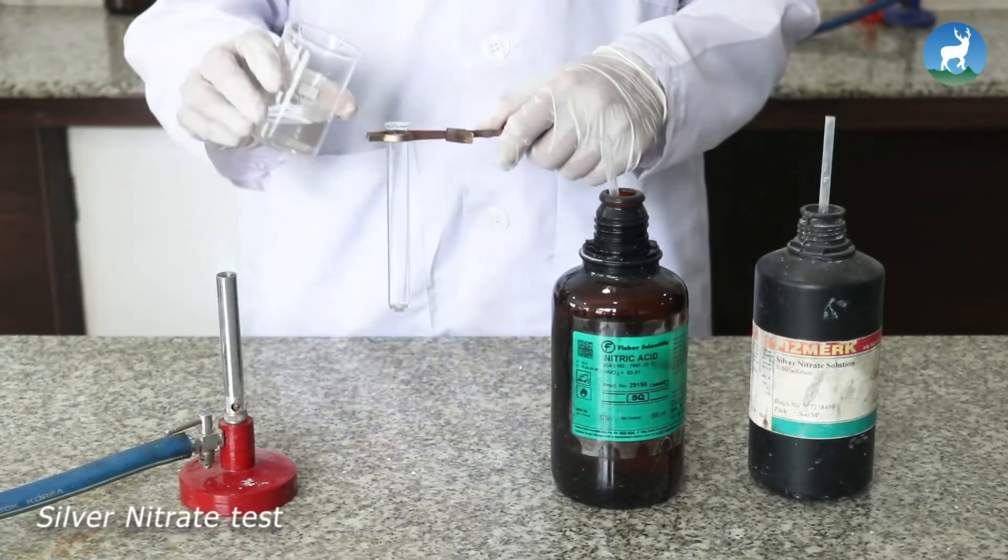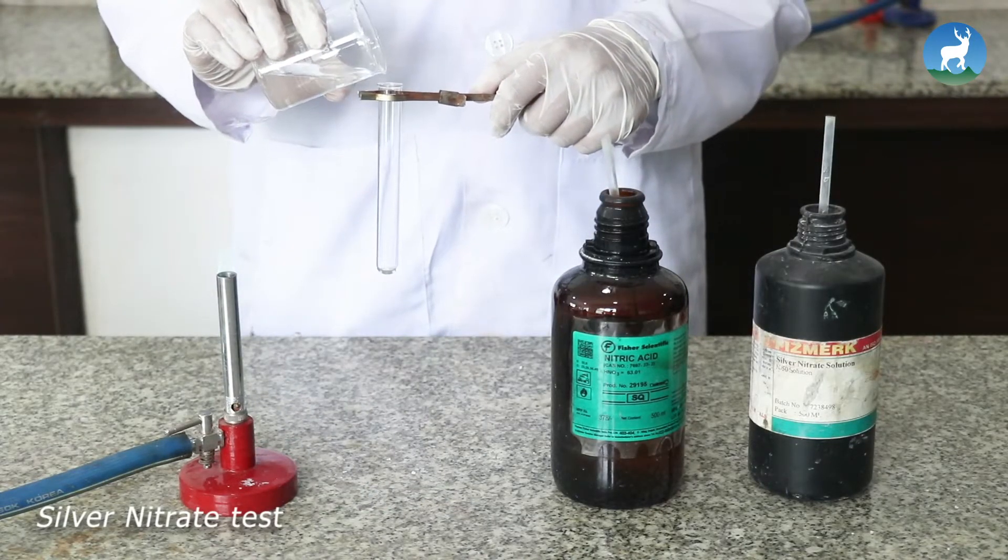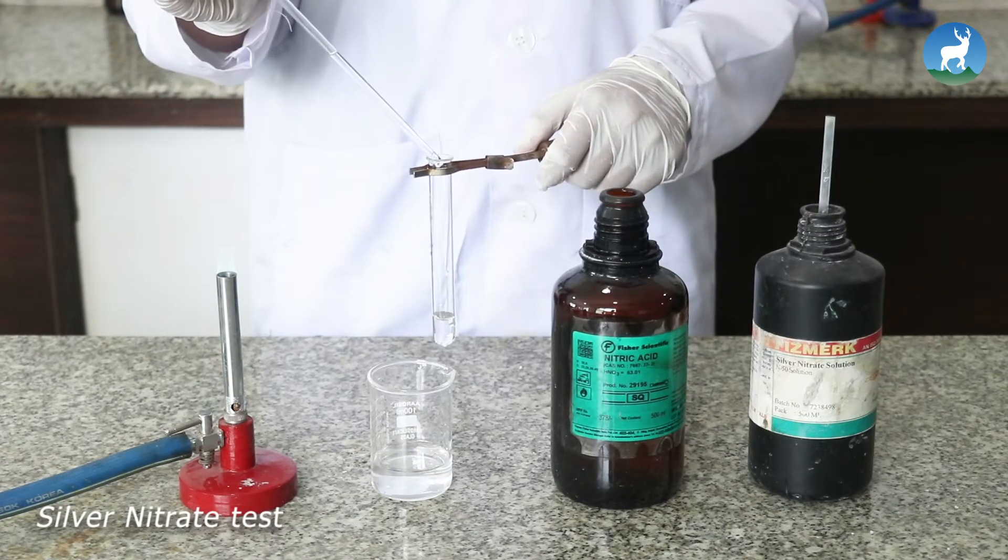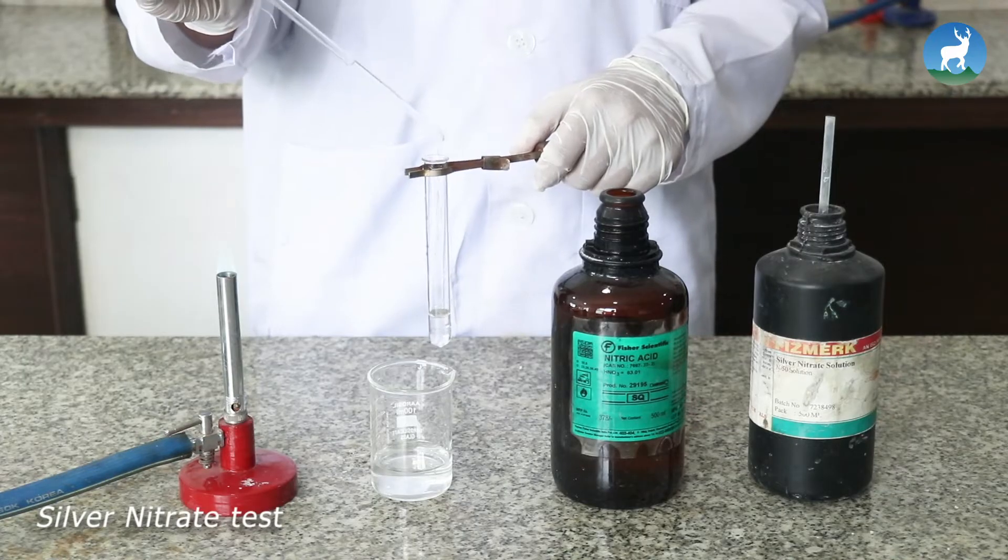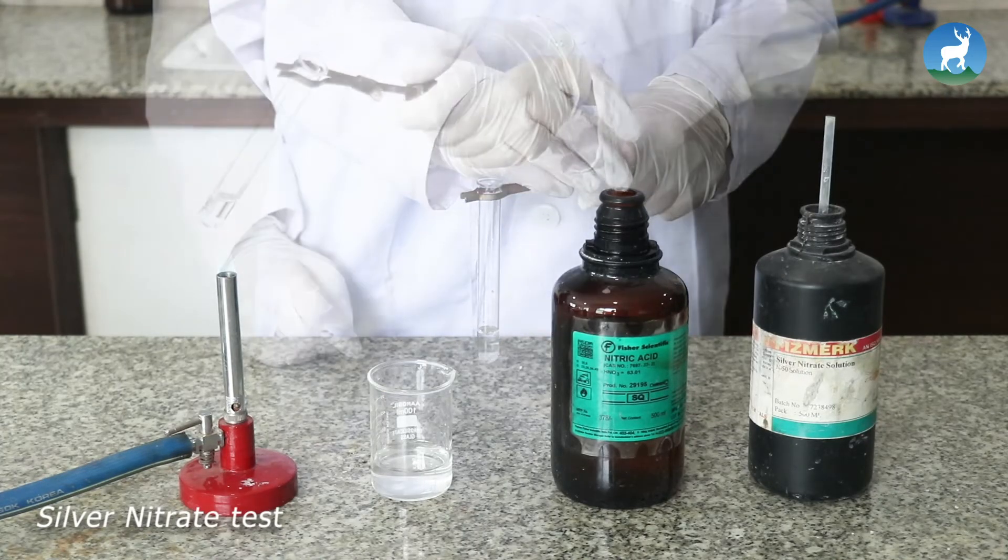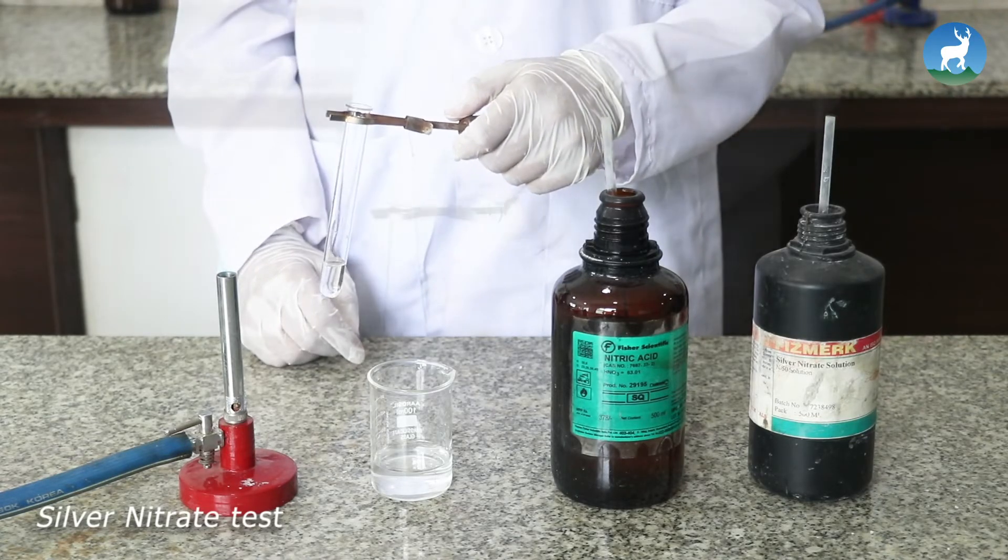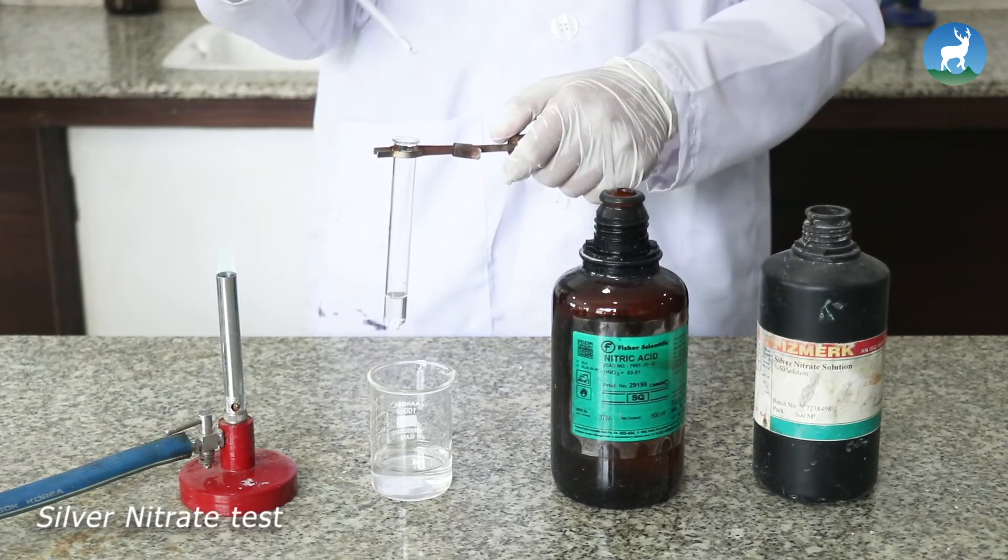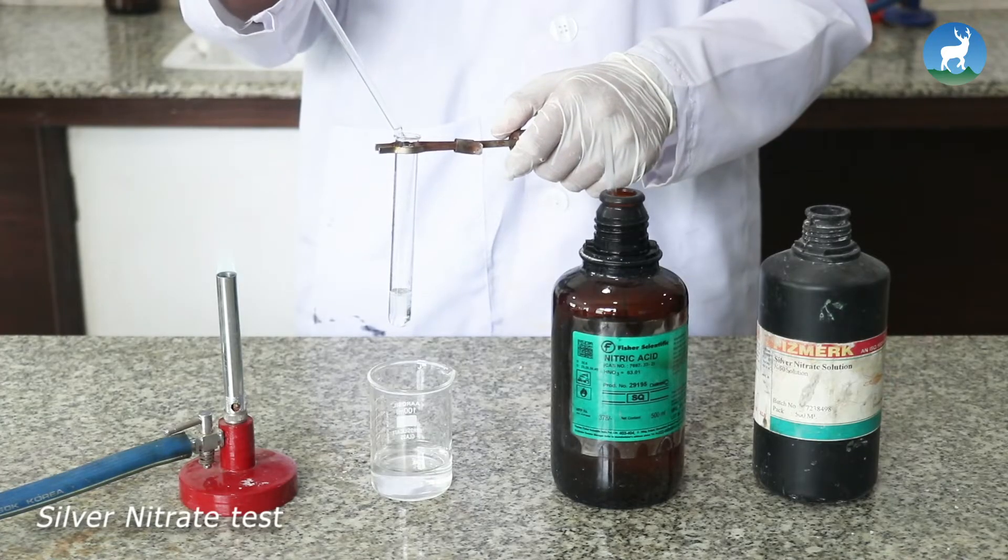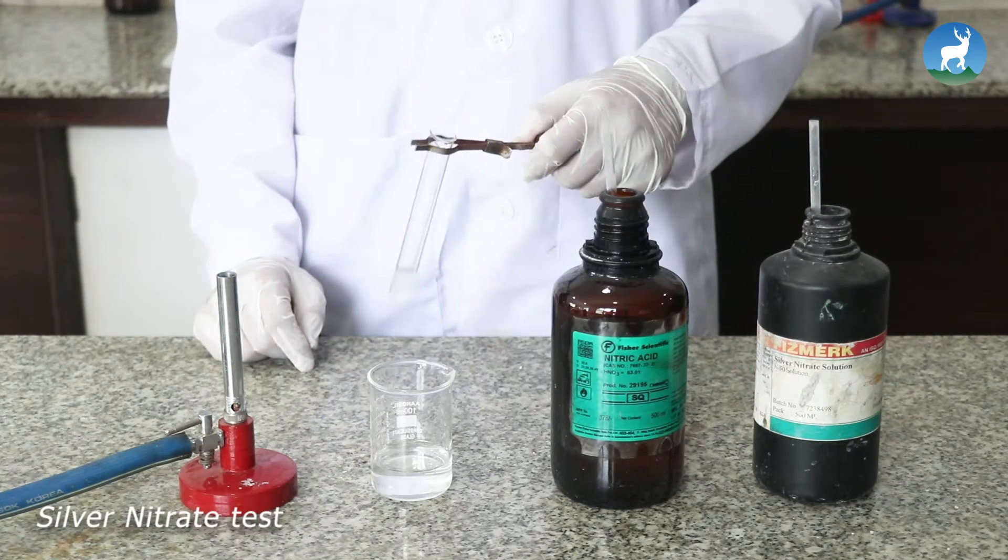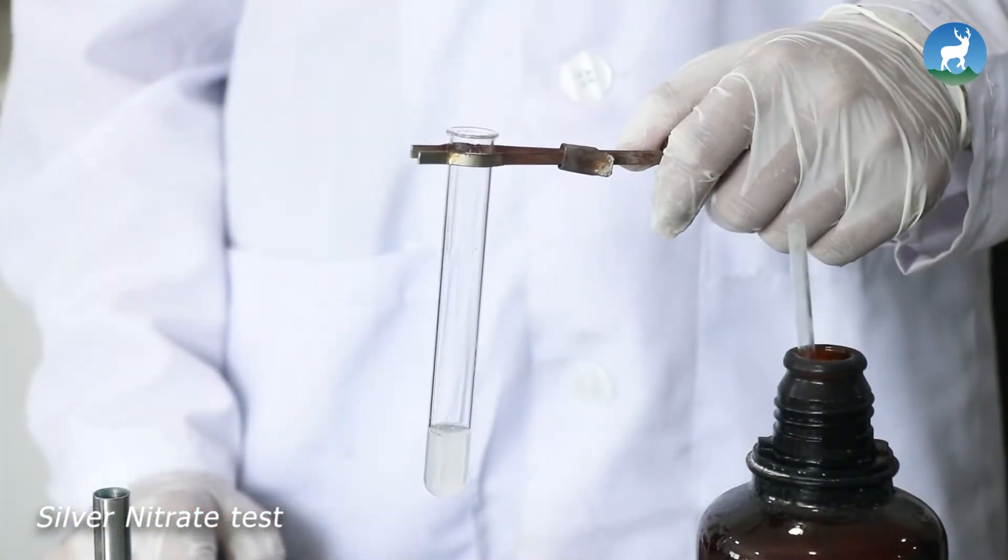Take 1 ml of original solution in a clean test tube. Add few drops of dilute nitric acid and boil it for some time. Then cool and add few drops of silver nitrate solution. No curdy white precipitate appeared. This indicated the absence of halides.